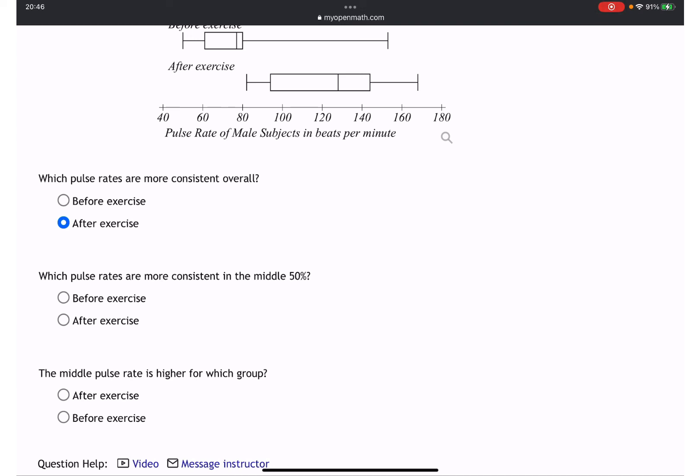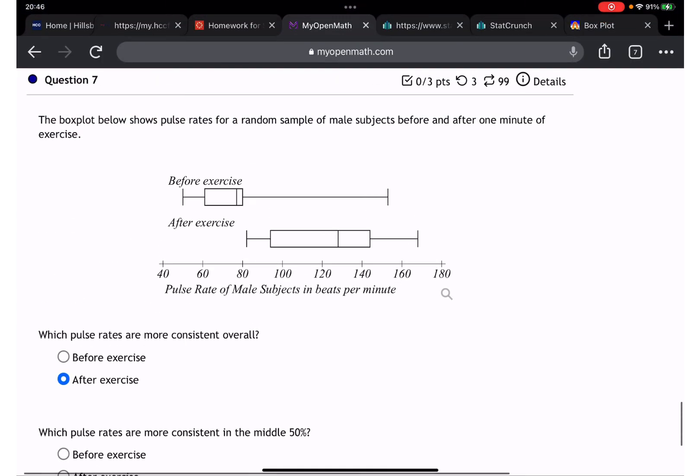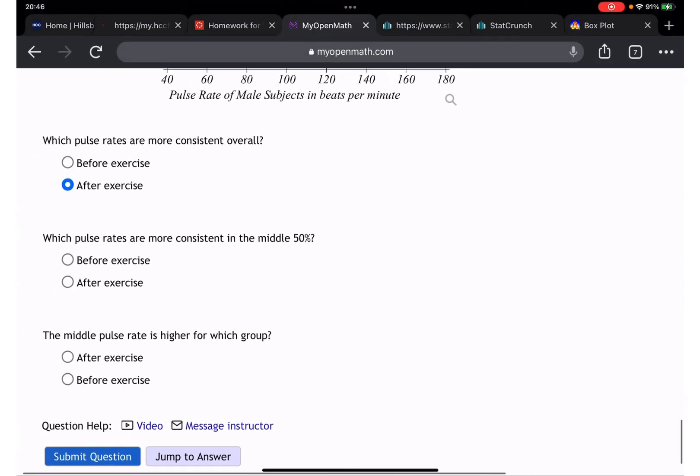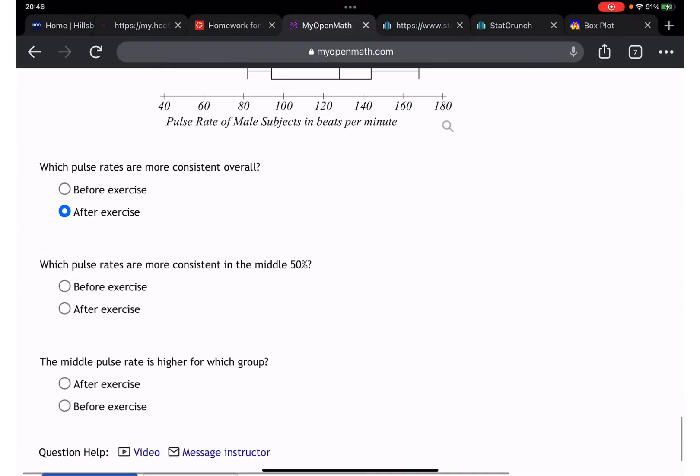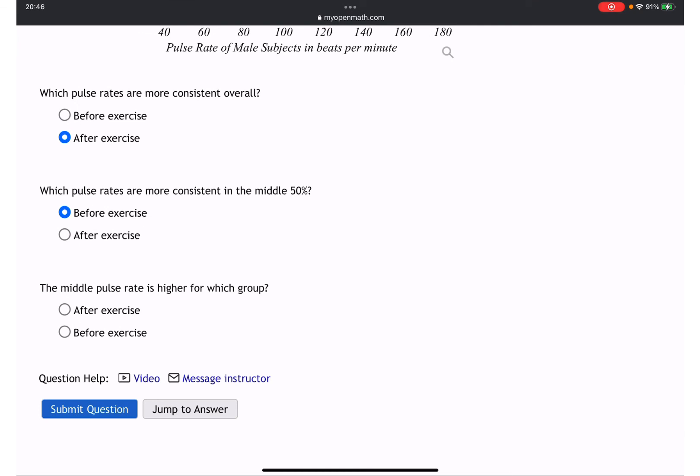Moving to question number 7. The box below shows pulse rate for a random sample of male subjects before and after one minute of exercise. Which pulse rates are more consistent overall? It's going to be after exercise, obviously, because it's more consistent overall.